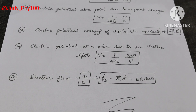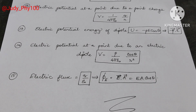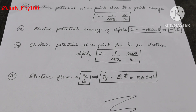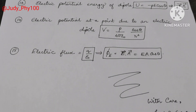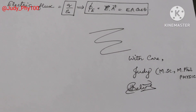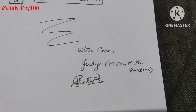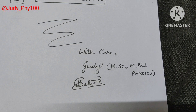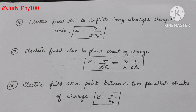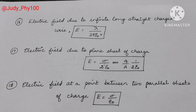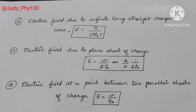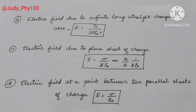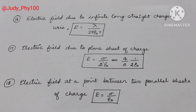All the formulas have been listed; now we will move on to problems. Electric field due to an infinite long straight charged wire: E is equal to lambda divided by 2 pi epsilon naught into r. Electric field due to a plane sheet of charge: E is equal to sigma divided by 2 epsilon naught, which is equal to Q by A divided by 2 epsilon naught.